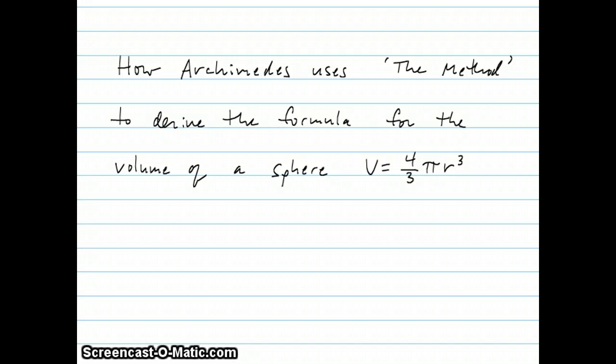Hi, this is Gary Rubenstein, and today I'm going to show you how Archimedes used what's called the method to derive the formula for the volume of a sphere, which is V equals four-thirds pi r cubed. He does two proofs of this in his career. One is a geometric proof, and this one he considered more of an informal proof, and it uses something known as the law of the lever. I'm going to show you how that works.